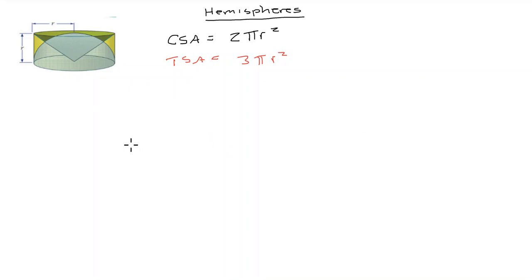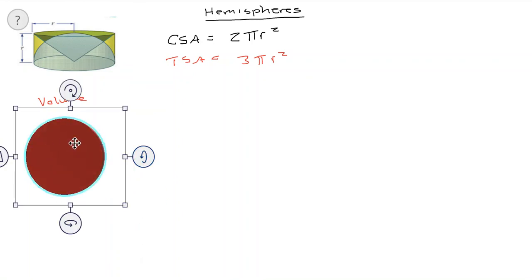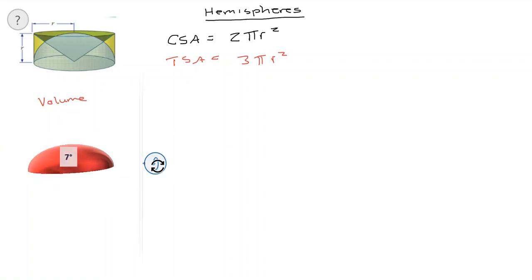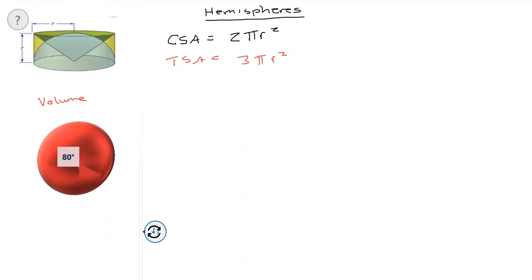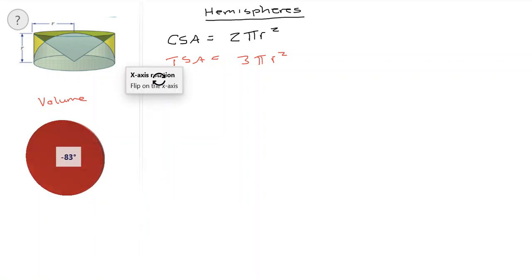Now if we think about the volume — so if we have a look at this diagram, what we have is a cone and then we have a cylinder, and then inside that we have the hemisphere. Just so we're aware, when we're talking about a hemisphere, this is what we mean: we have a shape like this. On the underside is the circular part, and then the top is the curved part. When we get the curved surface area, we're getting the area of the curve. The total surface area includes the area of the curve plus the area of the circle underneath.